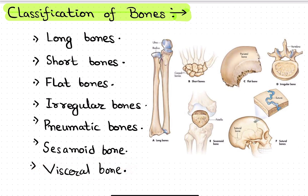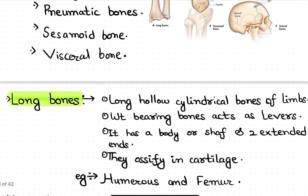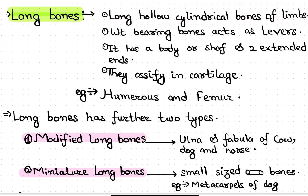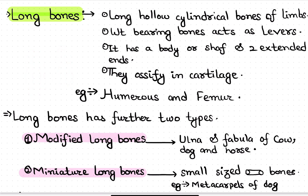We also have visceral bones — those which are present inside viscera or internal organs. Now let's discuss each bone type. Long bones are long, hollow, cylindrical bones found generally in the limbs. They are cylindrical in shape and are weight-bearing bones — the whole body's weight is carried by these long bones.